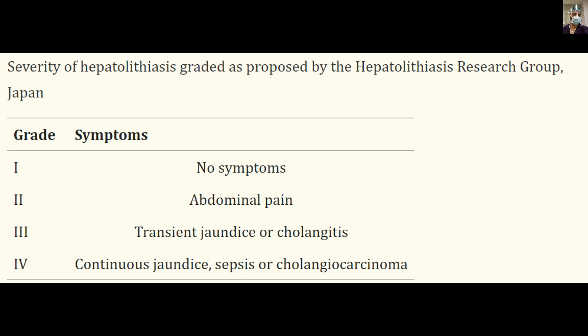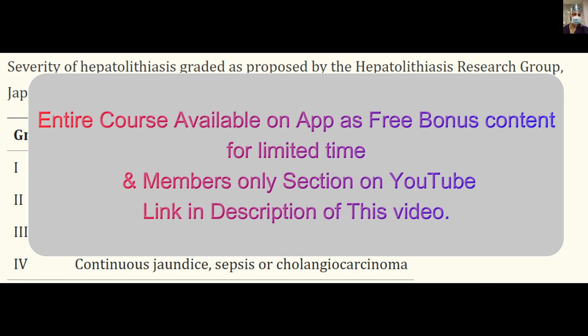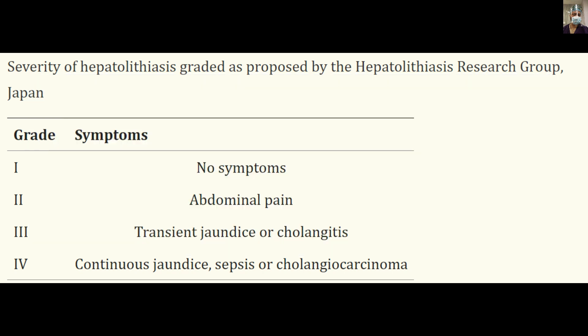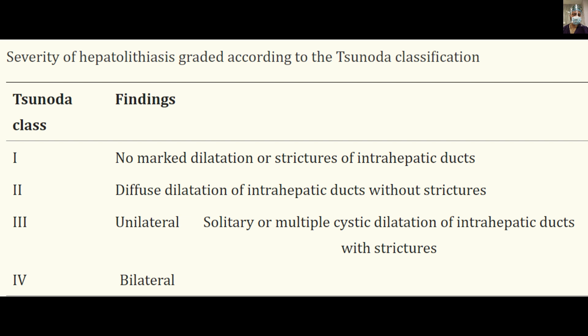According to severity, there is a classification by the Japan Research Group with Grade 1 to 4. Grade 1: asymptomatic, incidental finding on imaging. Grade 2: occasional abdominal pain. Grade 3: history of transient jaundice or cholangitis that settles. Grade 4: continuous jaundice, sepsis, or complications like cholangiocarcinoma. Our patient had persistent fever and jaundice even after ERCP stenting, requiring three stent exchanges before surgery — Grade 4 severity.